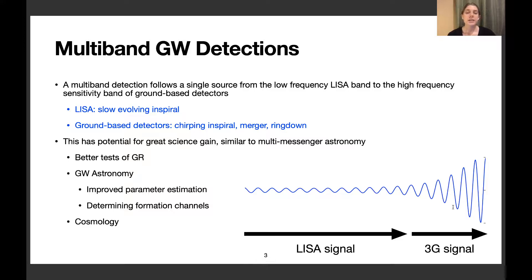Multiband detections follow a single source from the low-frequency LISA band up through the high-frequency ground-based detector band. LISA would capture the slowly inspiraling phase, and the third-generation detector would capture the chirping inspiral, merger, and ringdown phase. A detection like this would have great potential for science gain.